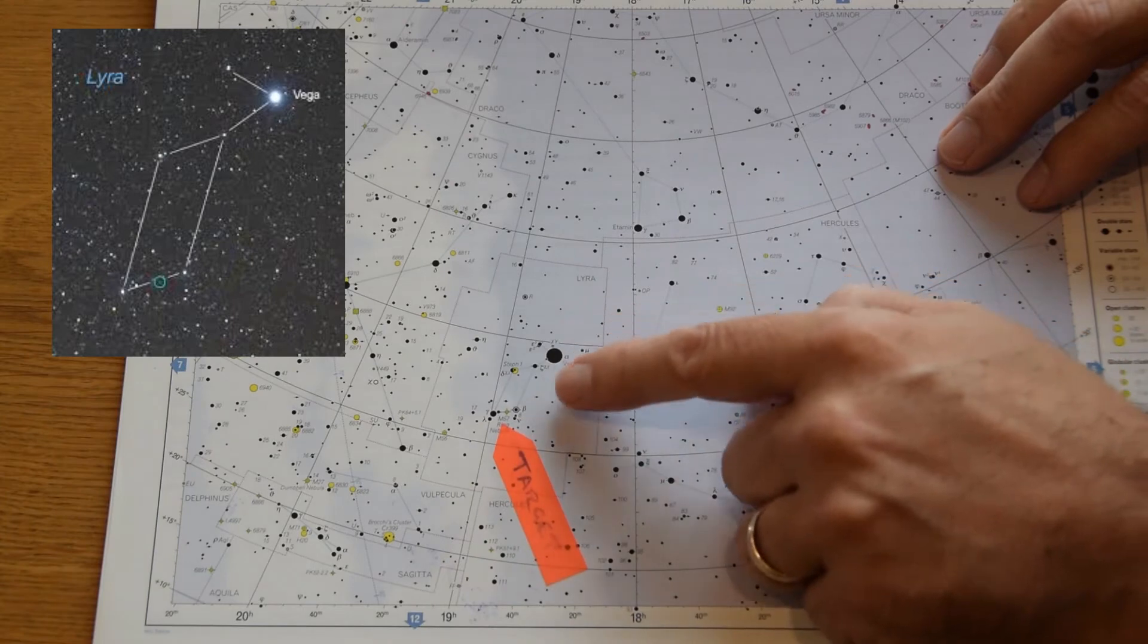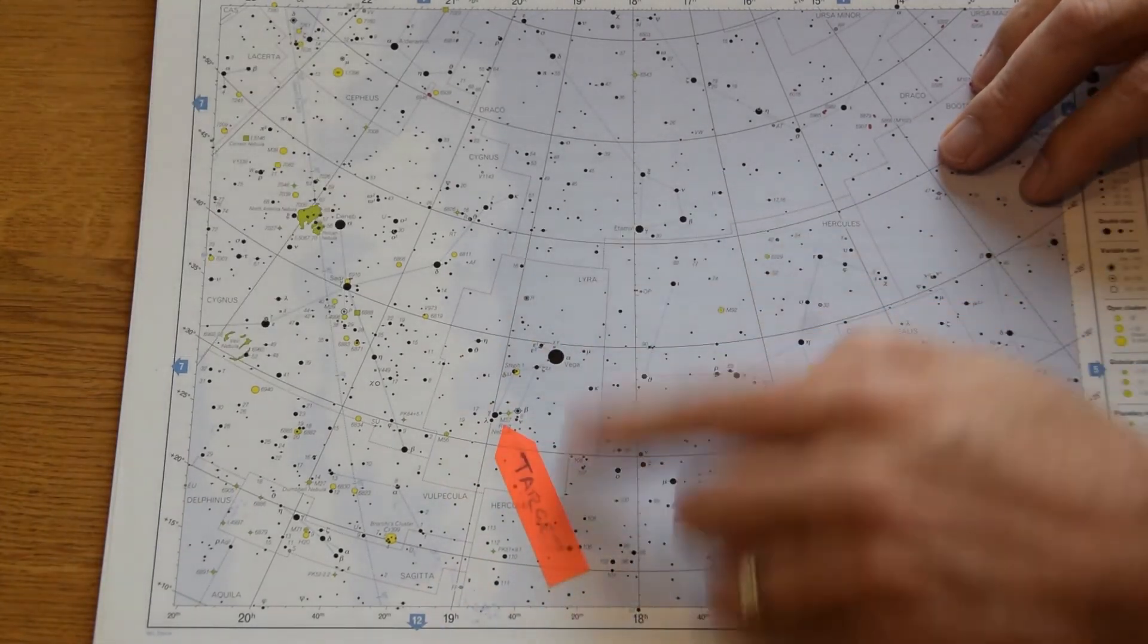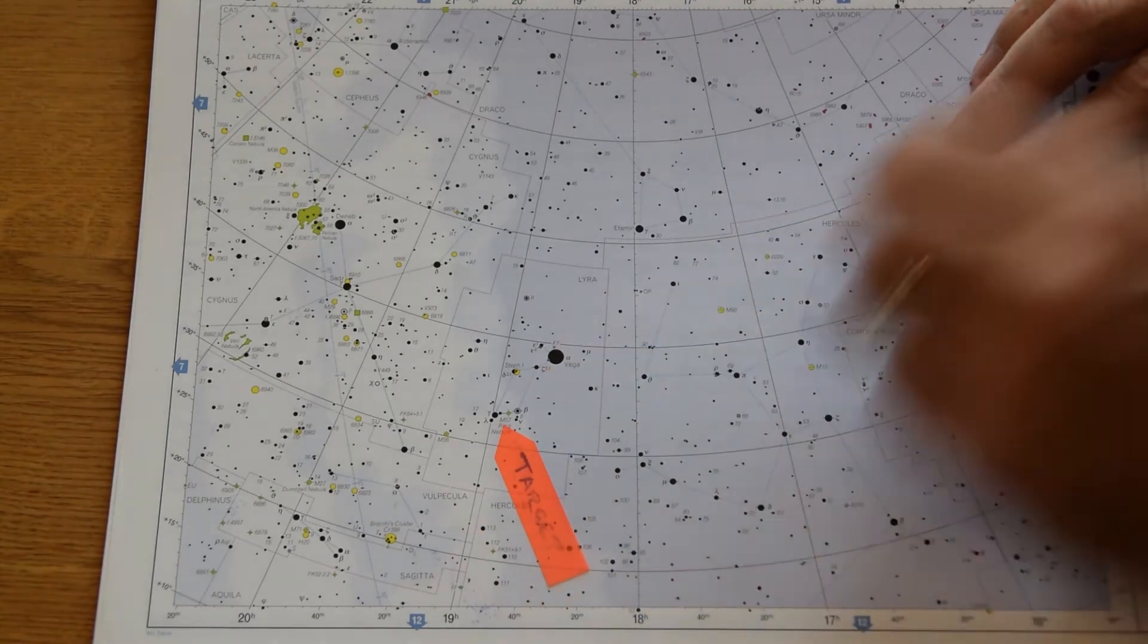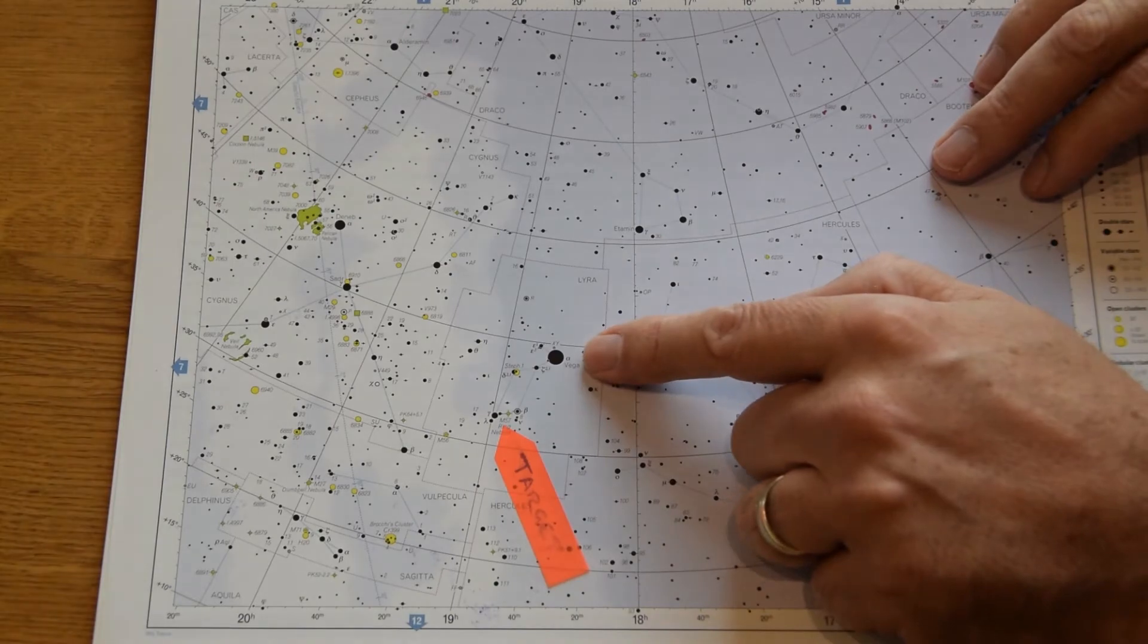So it's this asterism you can see here, a parallelogram coming away from there. There are some other stars of course in the constellation but these are the bright ones that we're interested in. And we're going to start with the brightest, Vega.